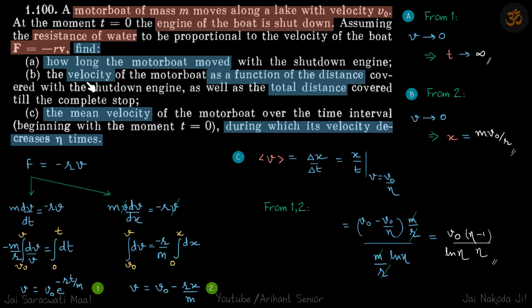The velocity of the motorboat as a function of distance, the total distance covered by the boat, and the mean velocity of the boat during which its velocity decreases eta times. So let's find one by one each value.